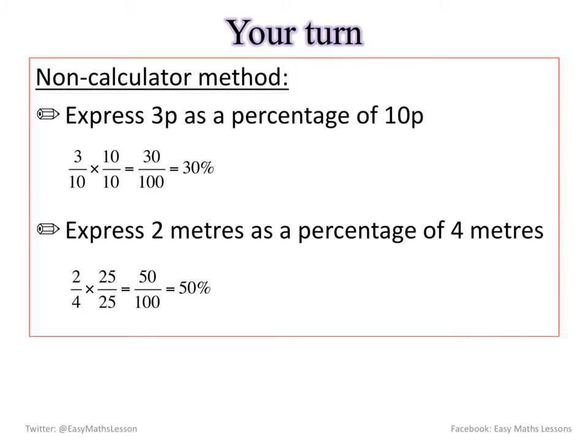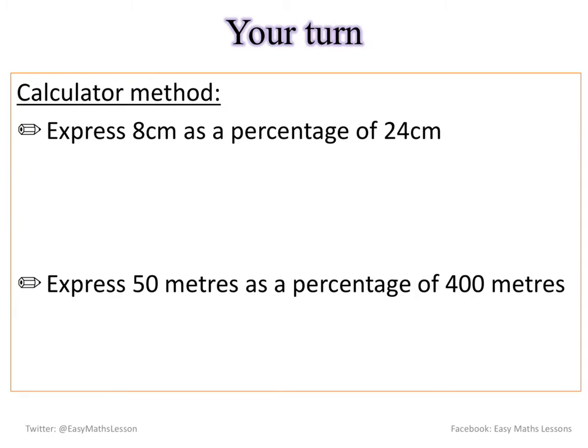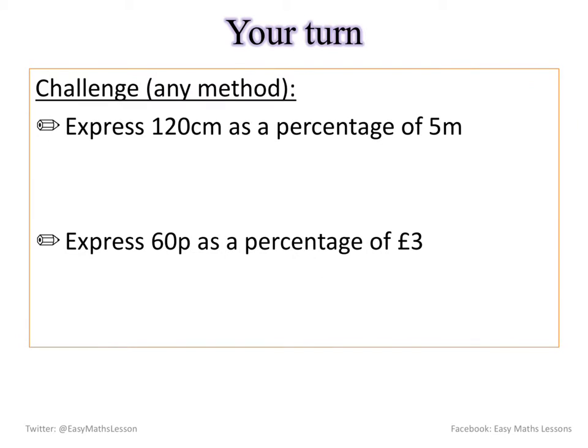All right let's look at the very first two questions. Answer for the first one is 30%. Answer for the second one is 50%. For the second set of questions it was just a calculator method so pretty straightforward. 8 divided by 24 times 100, but be careful because this one was a recurring decimal so I will have a decimal at the end. I've rounded it to one decimal place. And on this one I've got 12.5%.